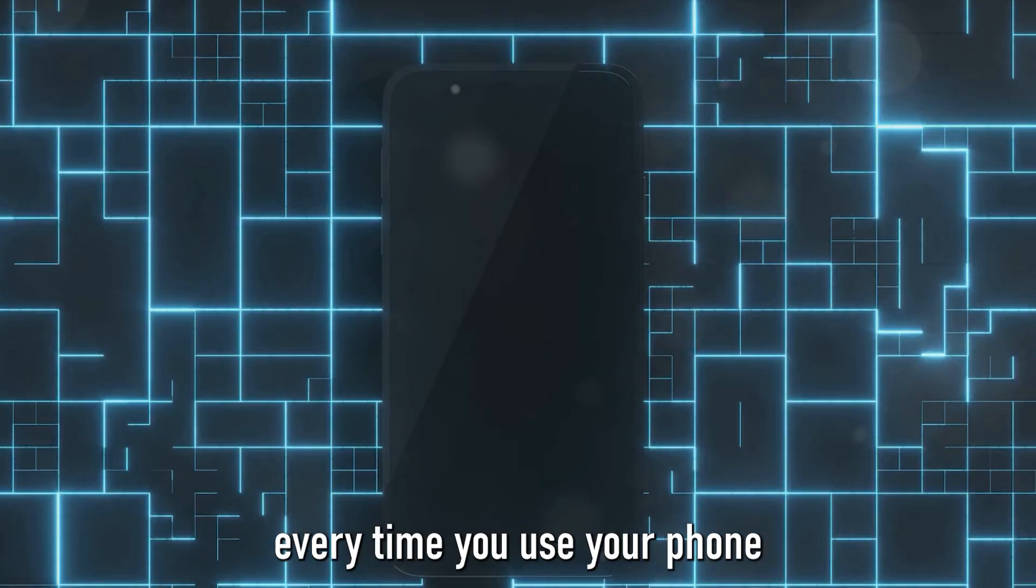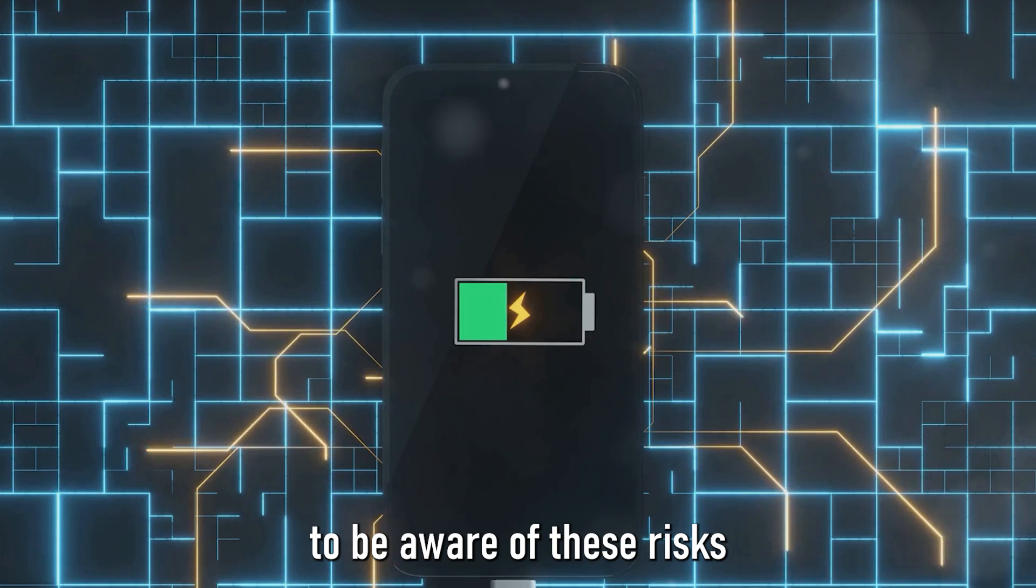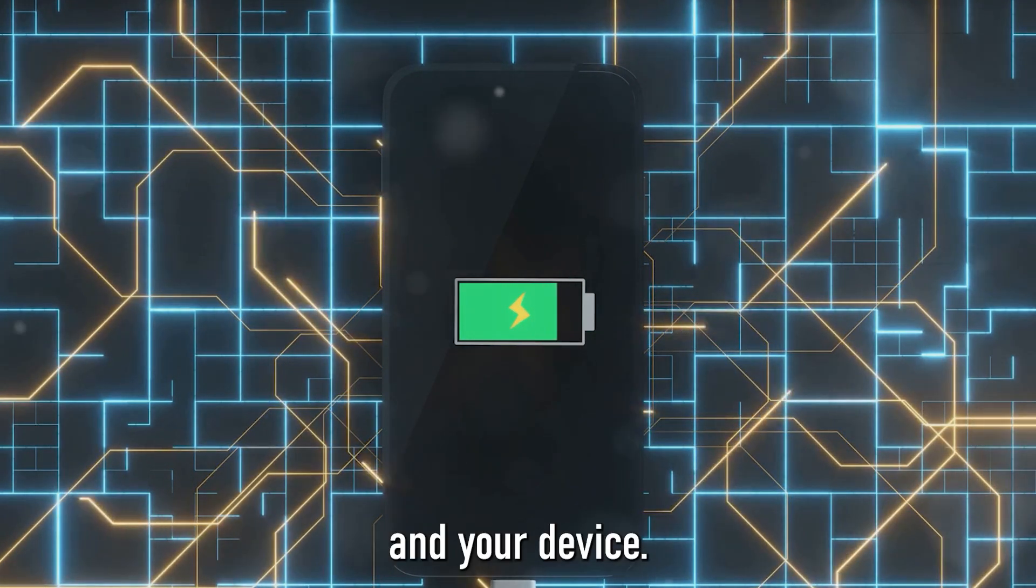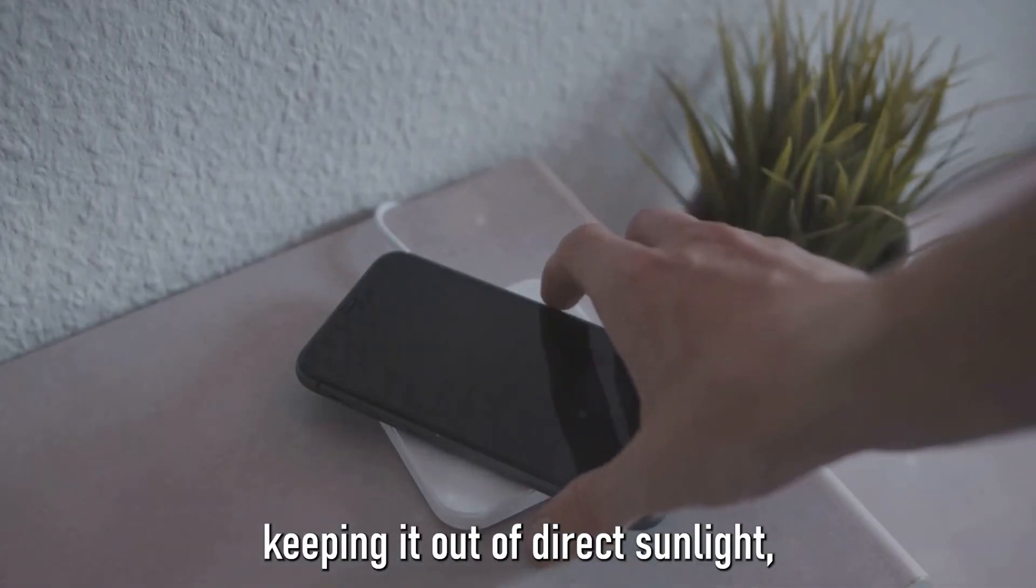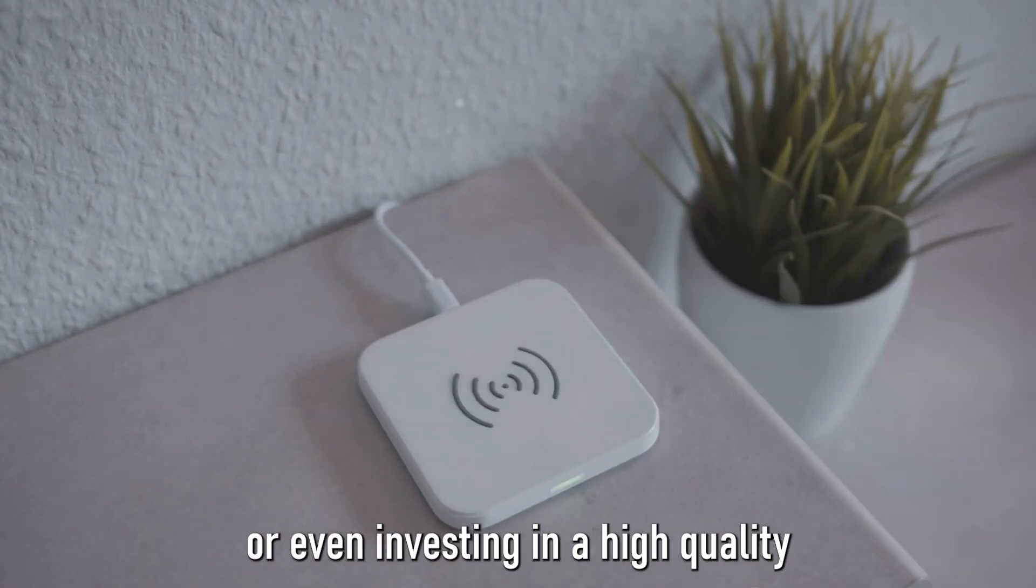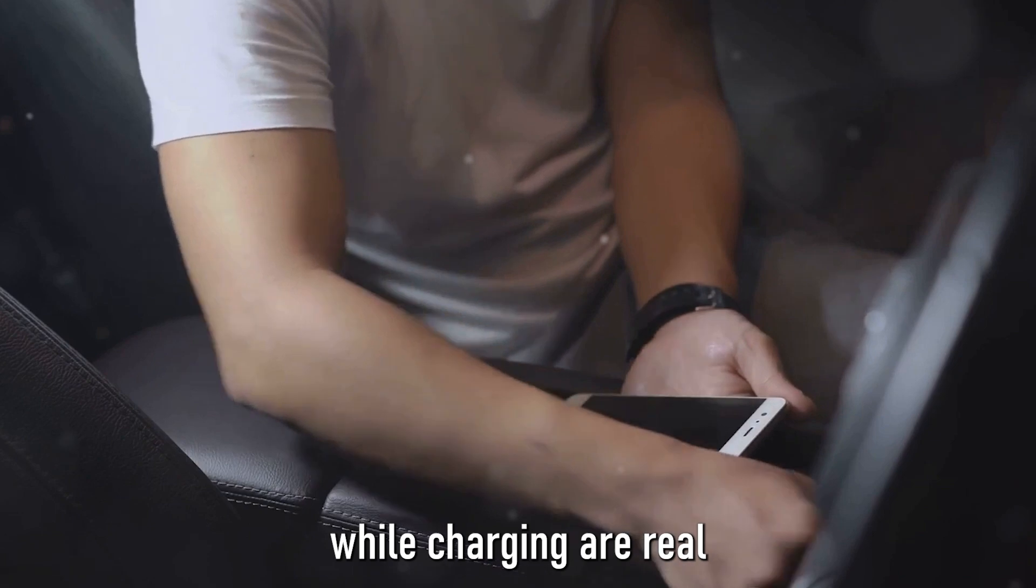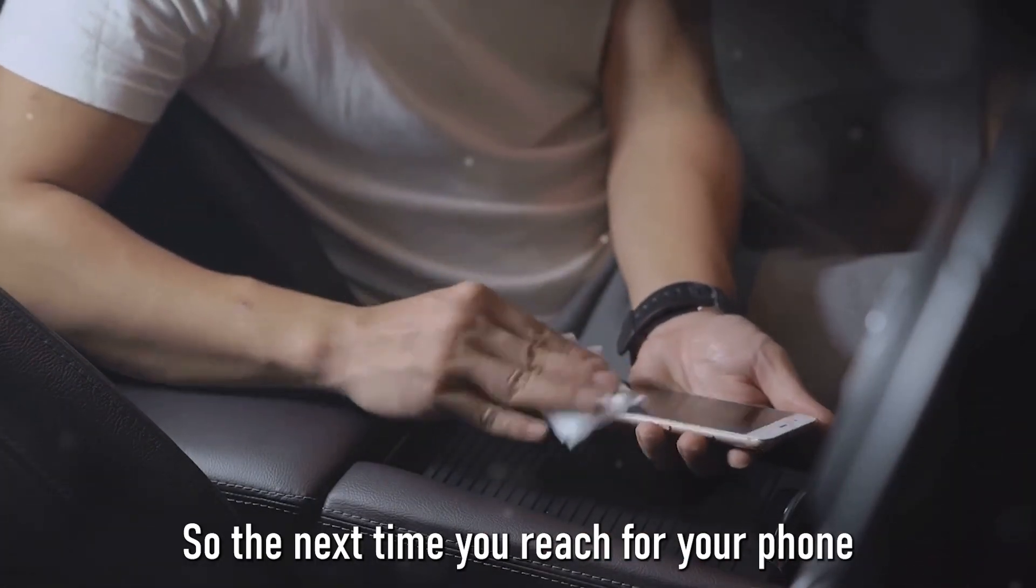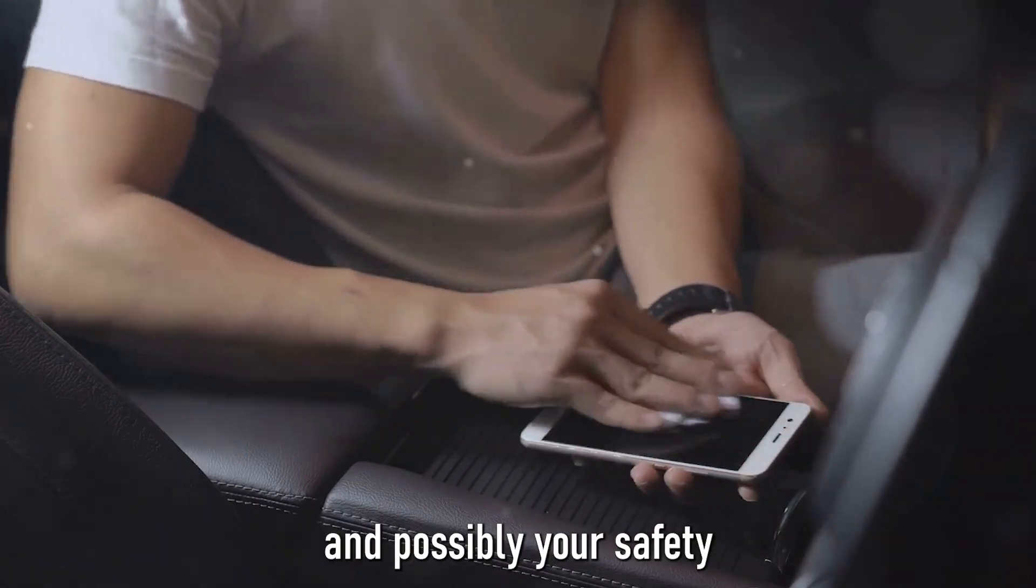Now, we're not saying that every time you use your phone while charging, it's going to explode in your hand. But it's important to be aware of these risks and take precautions to protect yourself and your device. Simple actions like letting your phone charge undisturbed, keeping it out of direct sunlight, or even investing in a high-quality charger can make a world of difference. As you can see, the dangers of using your phone while charging are real and not to be taken lightly. So the next time you reach for your phone while it's plugged in, think twice. Your phone, and possibly your safety, may thank you for it.